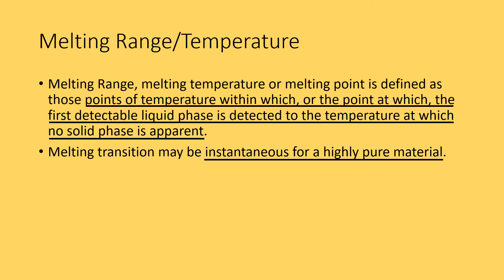If there is contamination in the material or if it is impure, there will be a drop in temperature from the expected range. So if any material has a much lower melting range than expected, it may be suspected to be impure. For solvents, there will be an elevation or increase of boiling point if impure or contaminated. For more information, you may browse the internet for elevation of boiling point or depression of melting point.